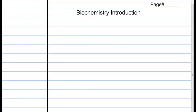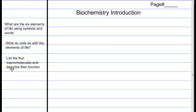You guys are going to create a note sheet in your notebook for this. Instead of having one that's already taped in, you're going to take a blank page in your notebook, write Biochemistry Introduction with a page number. Then you're going to draw a line down the left-hand side of the page and put these three statements in there, spaced out. What are the six elements of life using symbols and words? What do cells do with the elements of life? And then the last one is list the four macromolecules and describe their function. That should give you about two-thirds of the space for that last one. This is what your note sheet should look like.